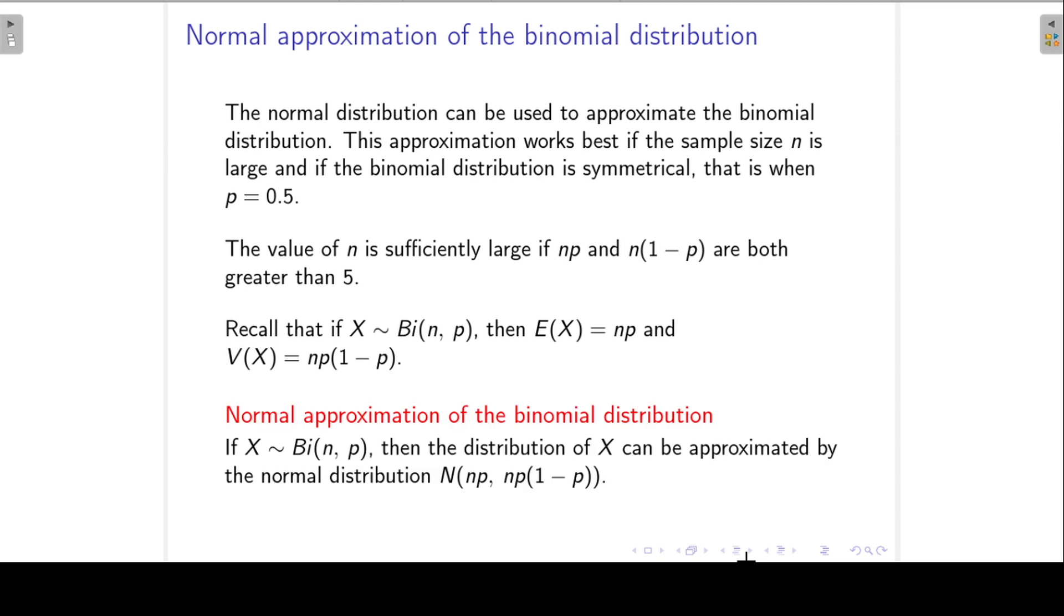From this we can now say that if X follows the binomial distribution with parameters n and p, then the distribution of X can be approximated by the normal distribution with mean np and variance np(1-p).